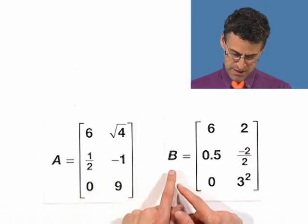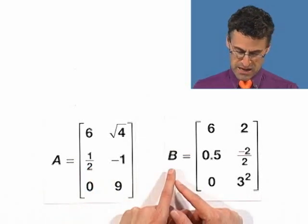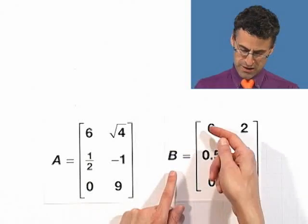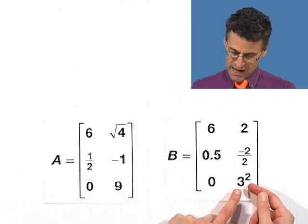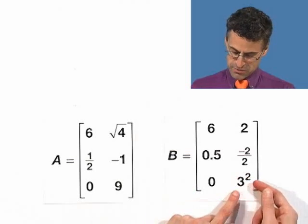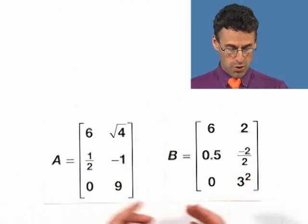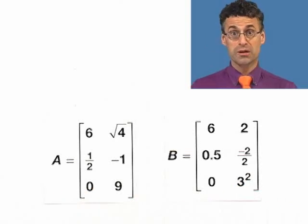You can go down the list. And you can look at B. For example, B32 would be the entry in the third row and the second column, which in this case would be 3 squared. Now, are these two matrices equal to each other?